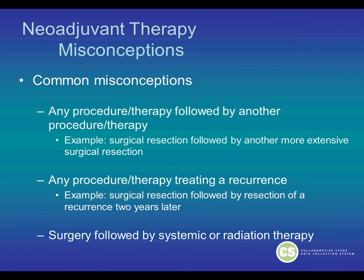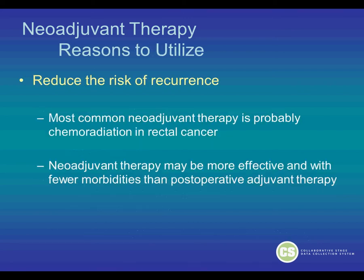There are some common misconceptions about neoadjuvant therapy. Some think it's any procedure or therapy followed by another procedure or therapy — for example, a surgical resection followed by another more extensive surgical resection. Another common misconception is that it's any procedure or therapy treating a recurrence — for example, a surgical resection followed by resection of a recurrence two years later, or surgery followed by systemic or radiation therapy. None of these are neoadjuvant therapy.